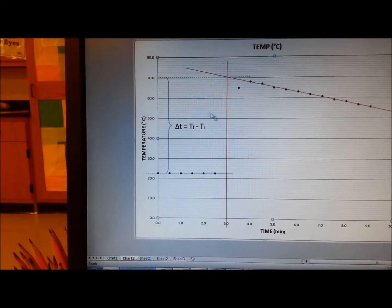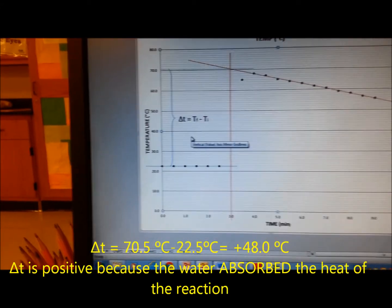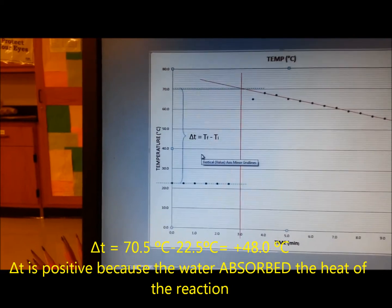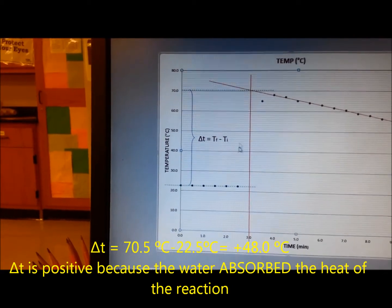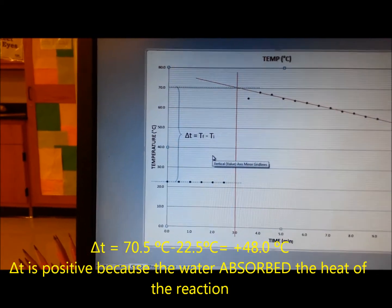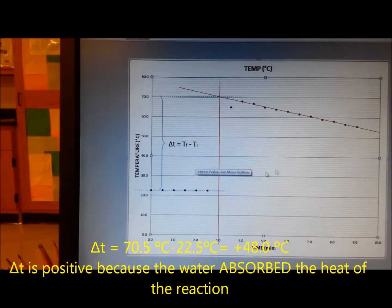The temperature increase in this case that the solution of the copper sulfate is going to be experiencing. In this case, that is the temperature change in the water, and with that delta T, we can calculate the amount of heat released.